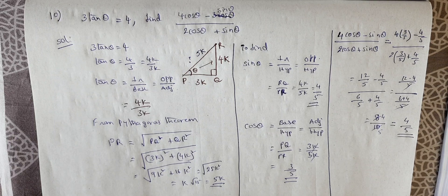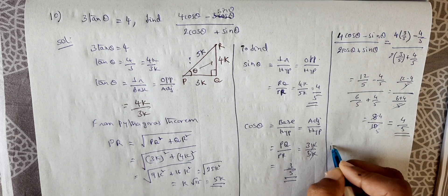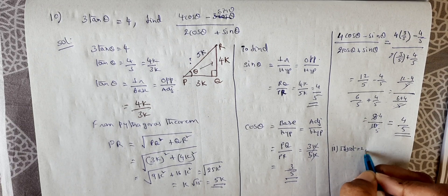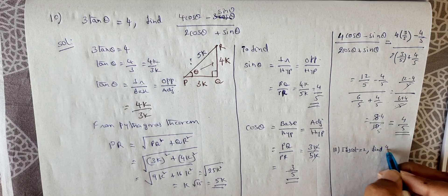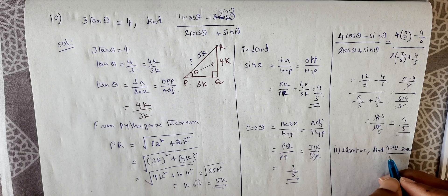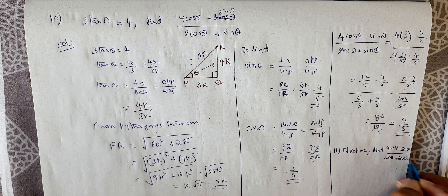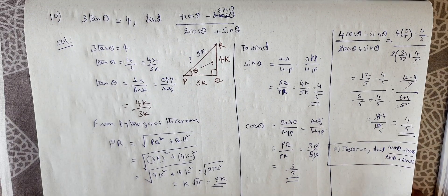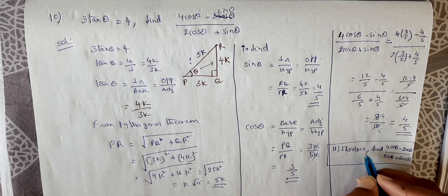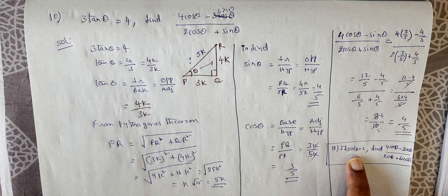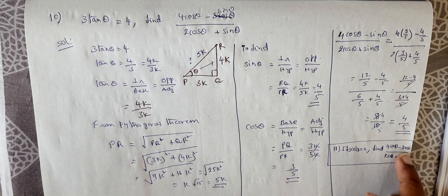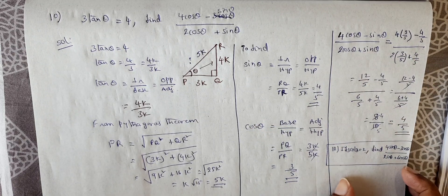Problem 11 is homework. It reads: if 3 cot θ = 2, find (4 sin θ - 3 cos θ)/(2 sin θ + 6 cos θ). From this, cot θ = 2/3. Assign the sides, use Pythagoras to find the third side, find sin and cos values, substitute in the expression, and simplify. Post your doubt if you can't get it.